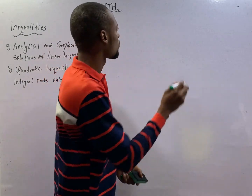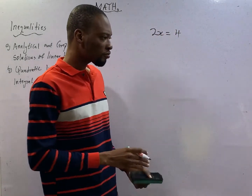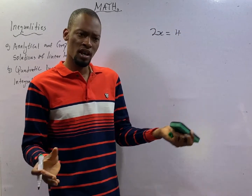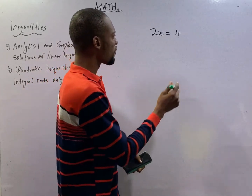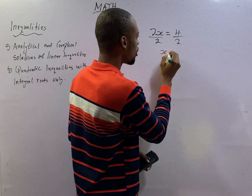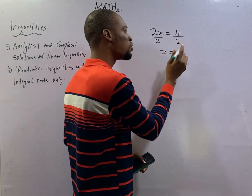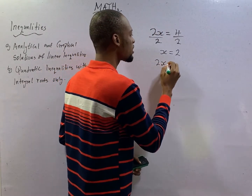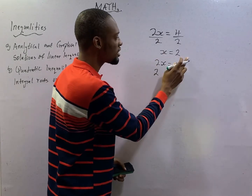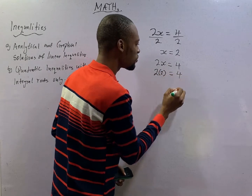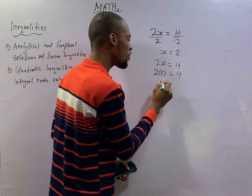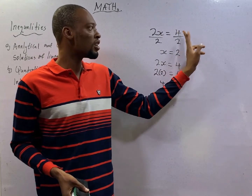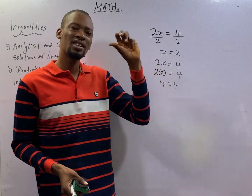If I say 2s equals 4, this implies that 4 equals 2s, and 2s equals 4. You can actually prove this: if you divide both sides by 2, s becomes 4 divided by 2, which equals 2. If you substitute the value of s into the equation 2s = 4, you have 2 times 2 equals 4. So 4 equals 4. You can see that the value of 2s is the same thing as 4, and 4 is the same thing as 2s. This is an equation.